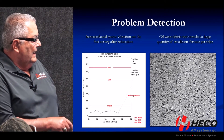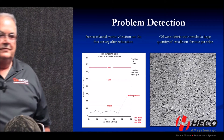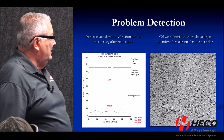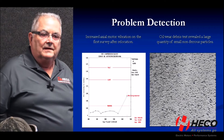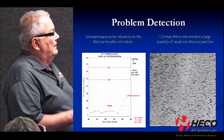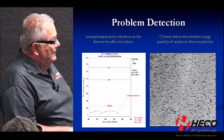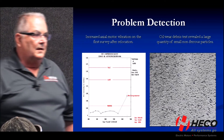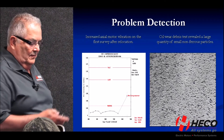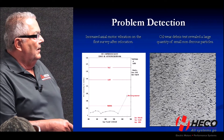We picked up a vibration increase. In the new building, when we first took our reading, something had changed — something wasn't good. It wasn't at extremely high amplitude levels, but something had changed that shouldn't have. We pulled a sample of oil and looked at it underneath the microscope, and all of those little particles you see are babbitt, coming from the motor bearing.